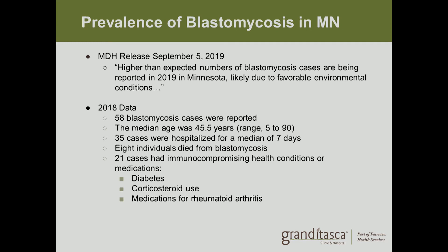What is the prevalence of blastomycosis in Minnesota? Last summer, the Department of Health released a statement saying there was a higher than expected number of blastomycosis cases, likely due to favorable environmental conditions — it was a particularly wet and humid summer. The most recent data from 2018 showed 58 cases of blastomycosis. The median age of infection was 45.5 years, with a range from 5 to 90. Thirty-five of these cases were hospitalized for an average of seven days.